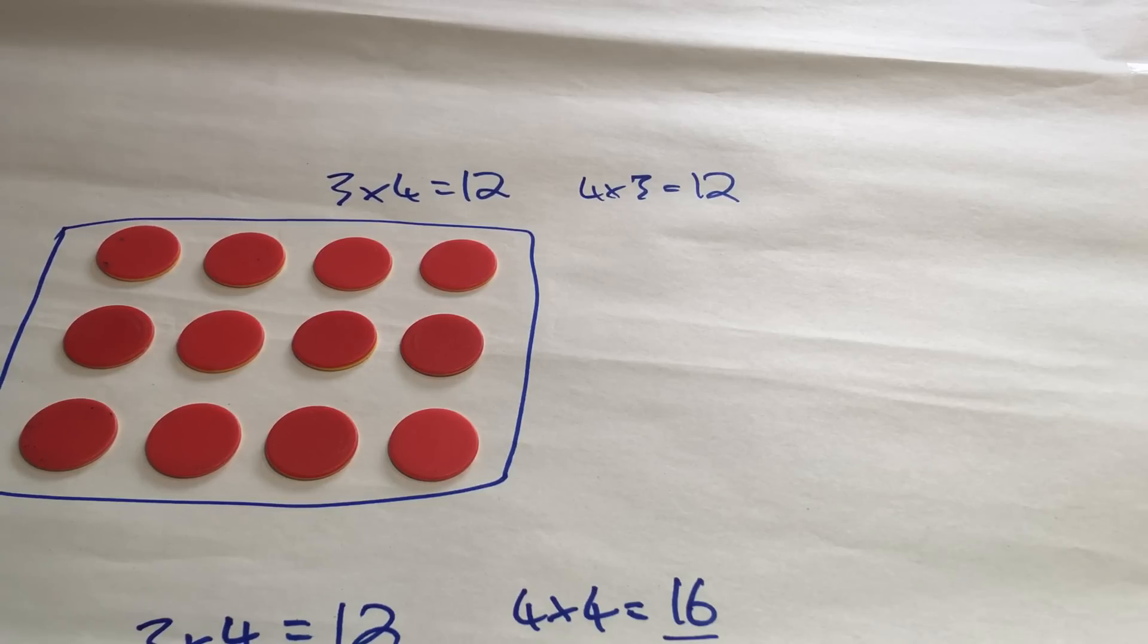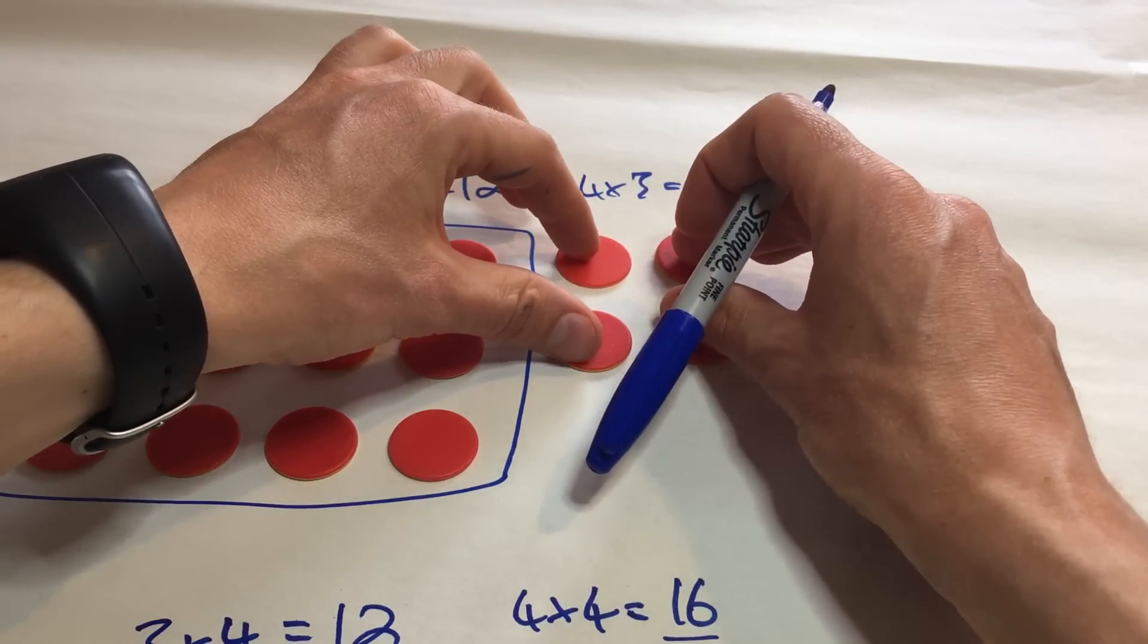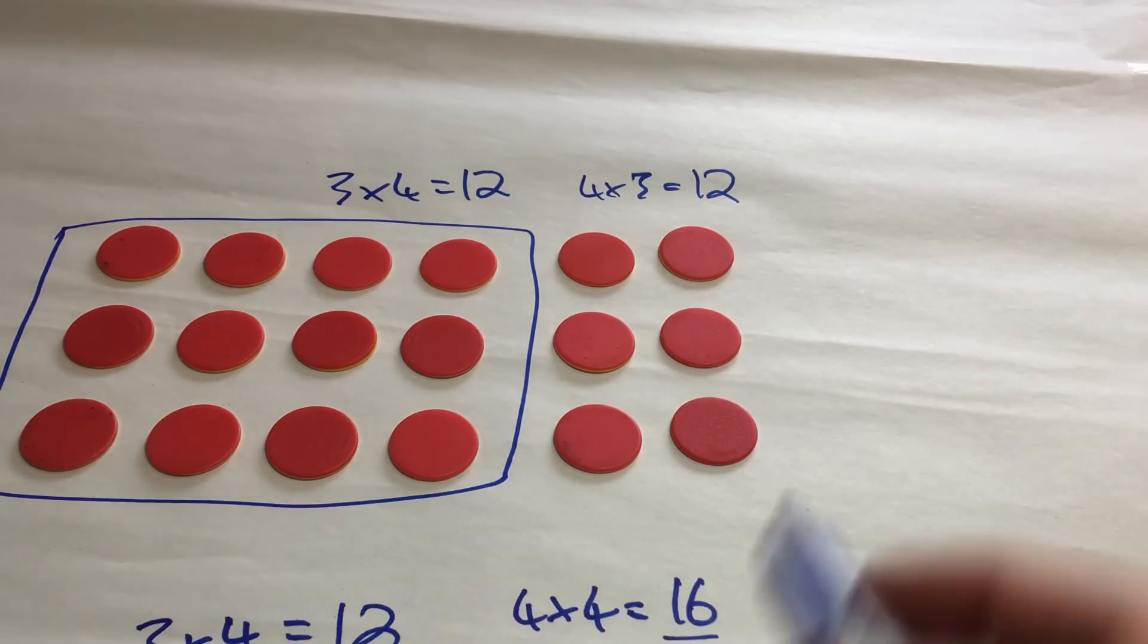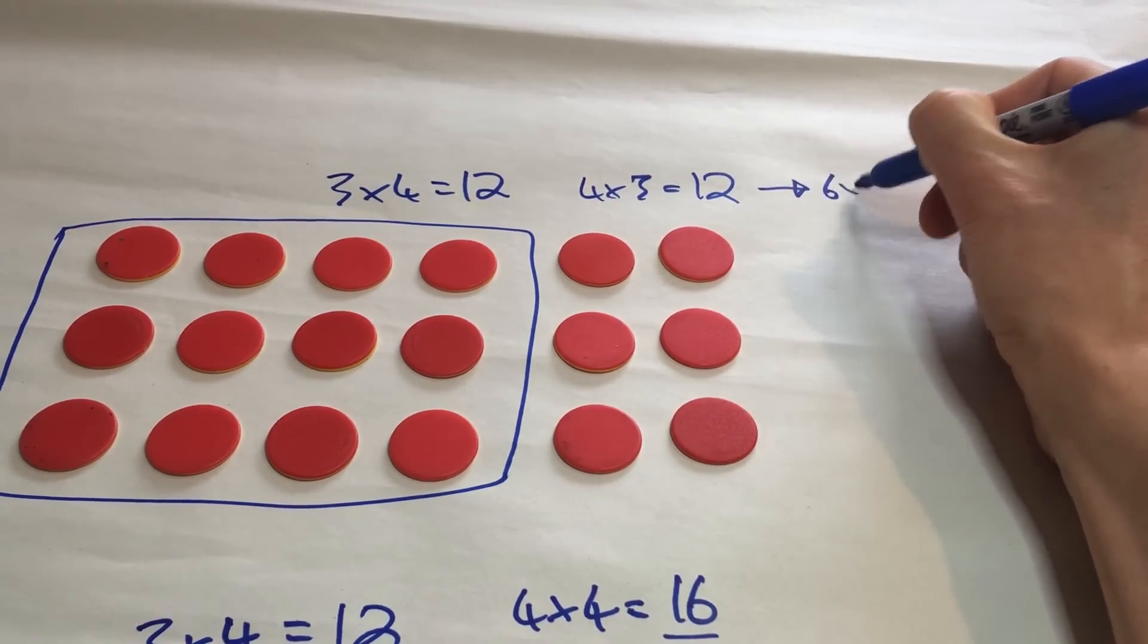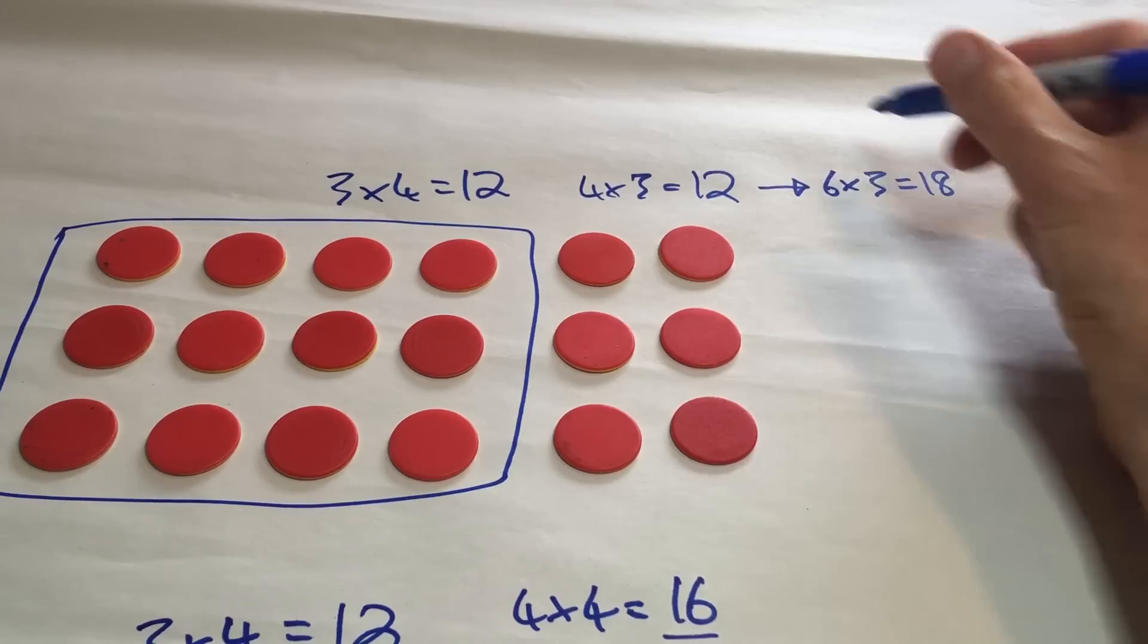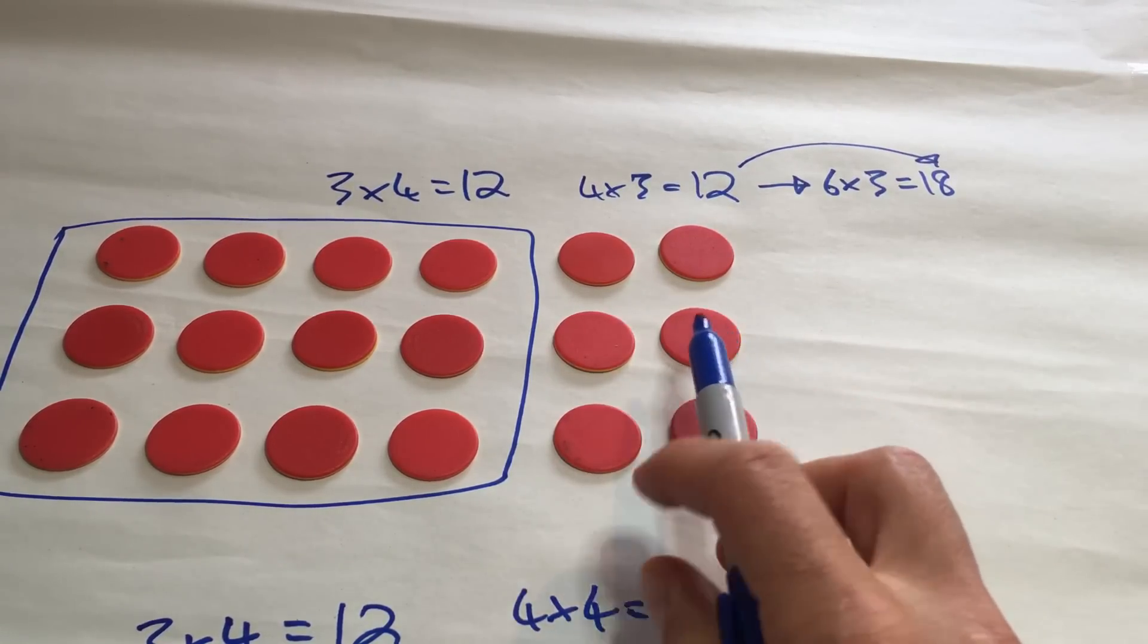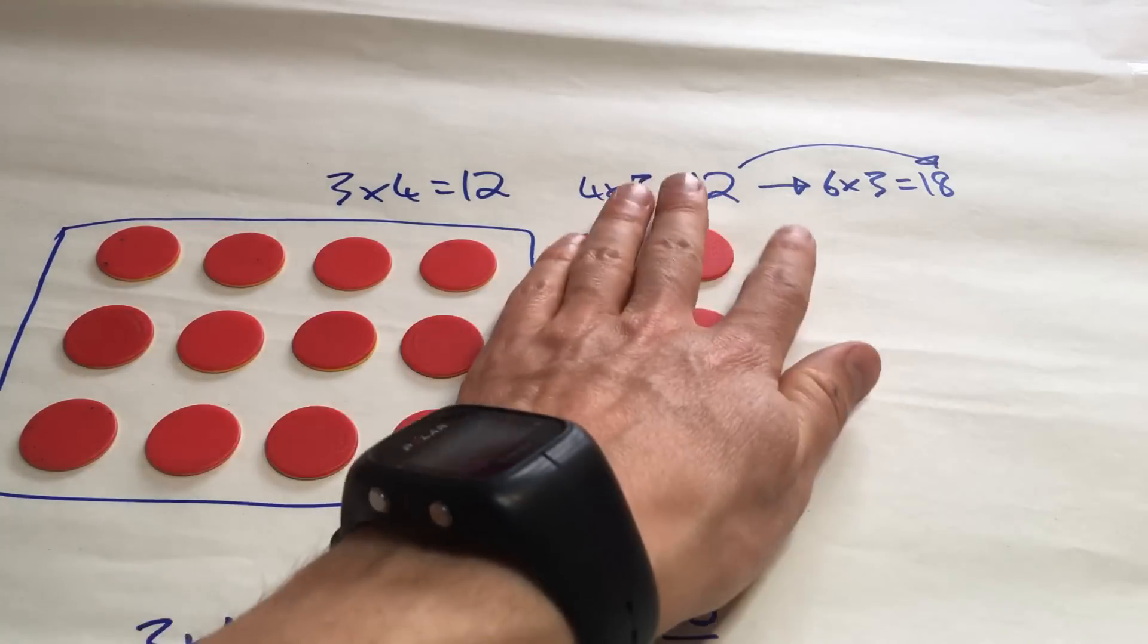OK, let's have a look at another related fact. So here, I've got 4 lots of 3. I'm going to change that to make it... Let me just put them here. So, if you see 4 lots of 3 is 12. And I've changed that to make it now 6 lots of 3. And that is 18. And what's the difference here? Well, the difference is 6. Because I've got another 2 lots here. And 2 lots of 3 there.